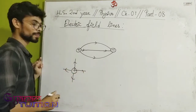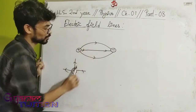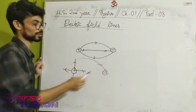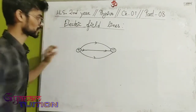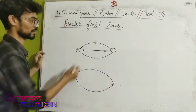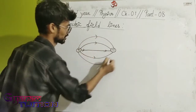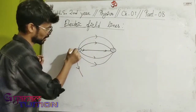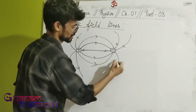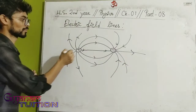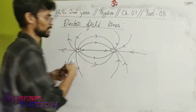The electric field lines for a positive charge go outward and for a negative charge go inward. Between a positive and negative charge pair, the lines form a cylindrical shape. The electric field line pattern between the two charges reflects the nature of each charge.